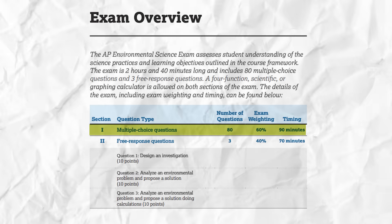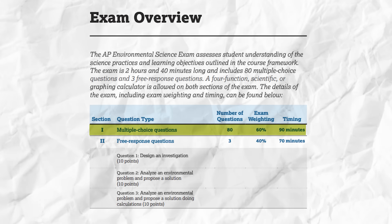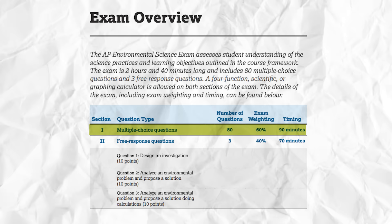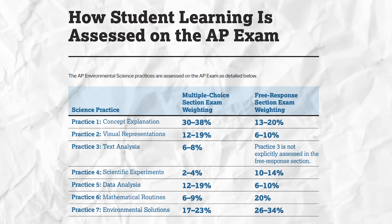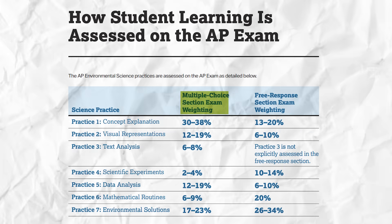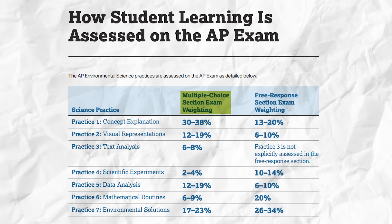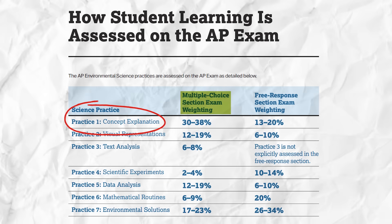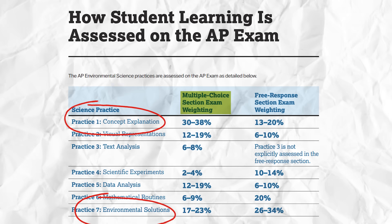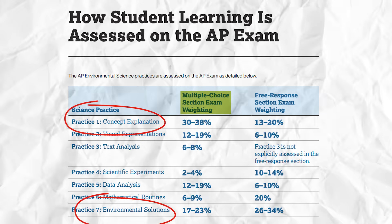So let's get right into it. The 2024 APES exam will be on May 9th at 8am local time. First will be the multiple choice section, which will make up 60% of your overall exam score. There will be 80 questions with four answer options each, and you'll get 90 minutes to answer them all. If we take a look at the course and exam description, we can see a breakdown of the different types of MCQ questions. By far the two biggest categories are concept explanation and environmental solution questions, and these are usually pretty straightforward 'do you know your stuff' questions.